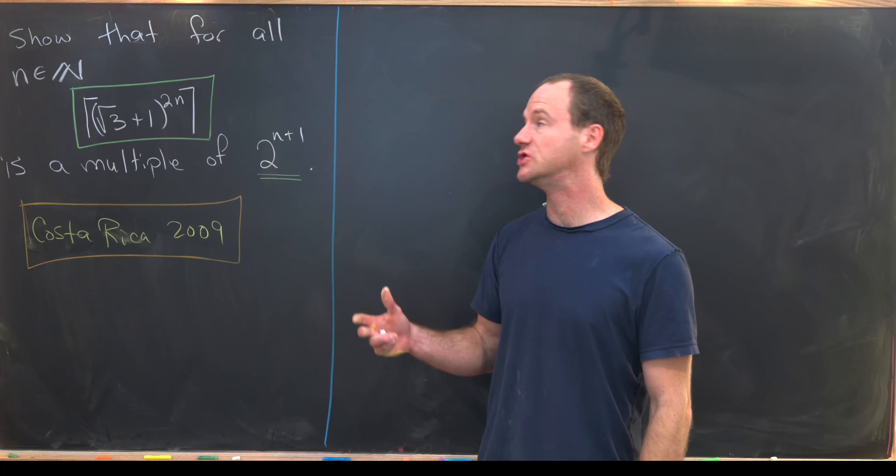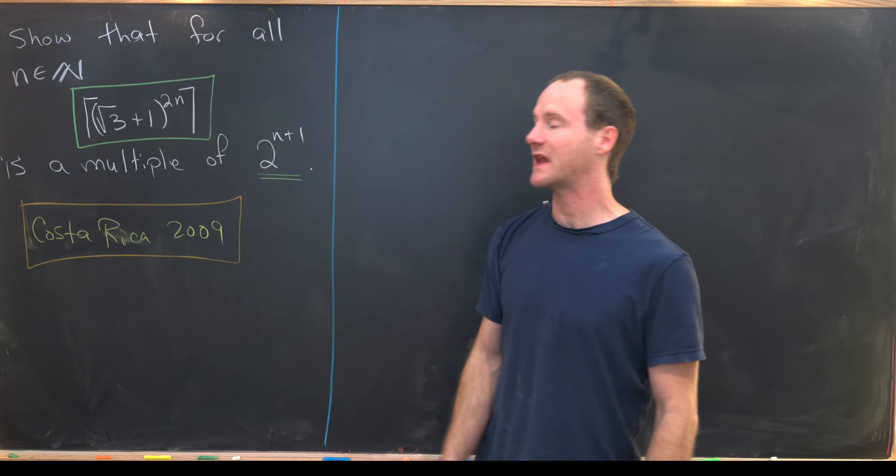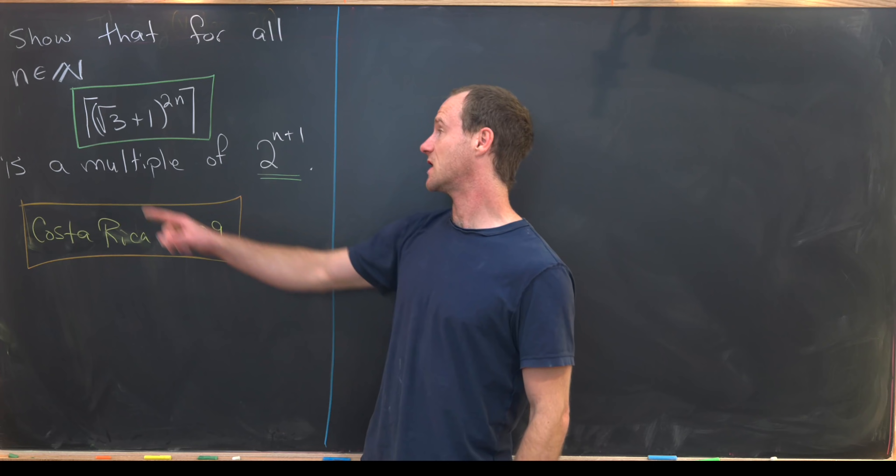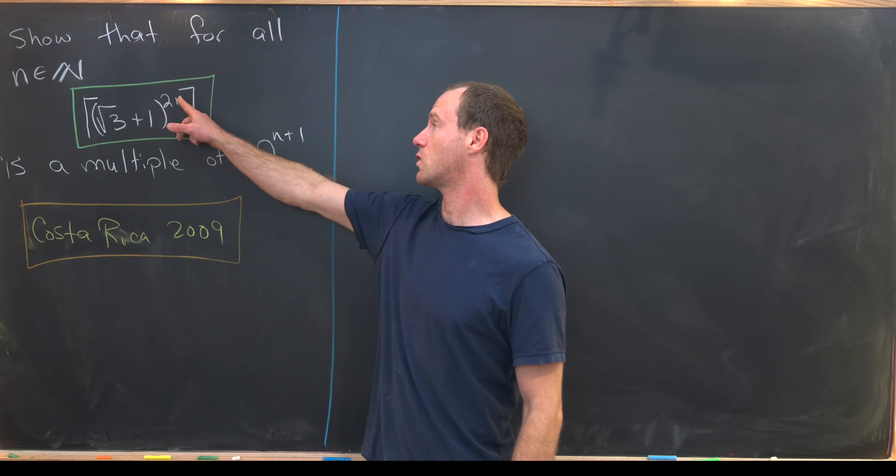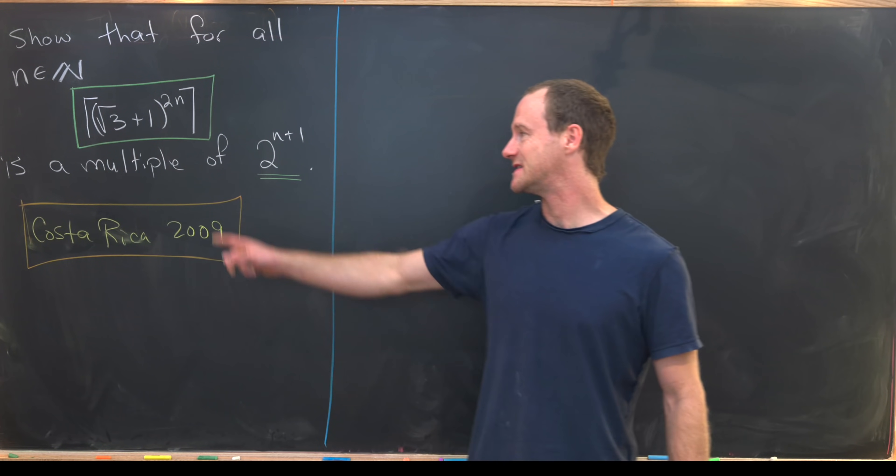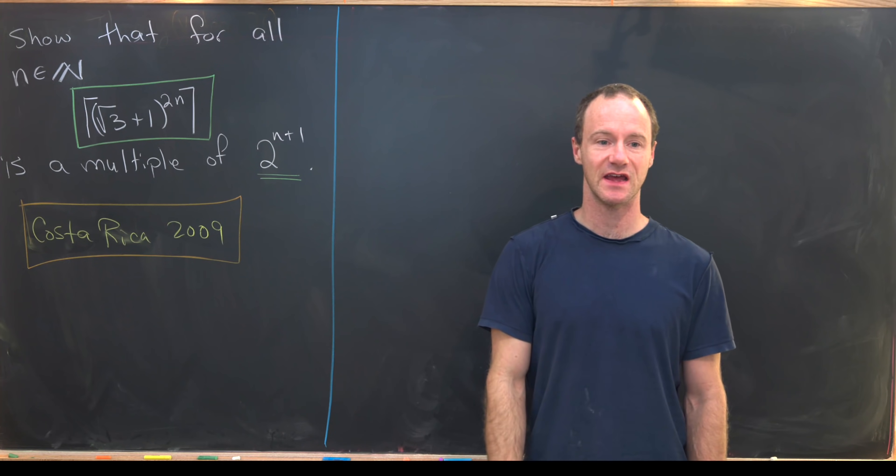So what we want to do is show that for all natural numbers n, the ceiling of the square root of 3 plus 1 to the 2n is a multiple of 2 to the n plus 1.